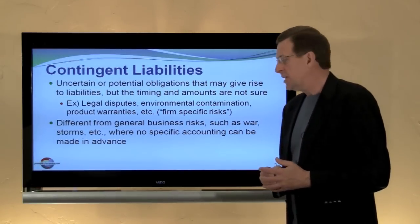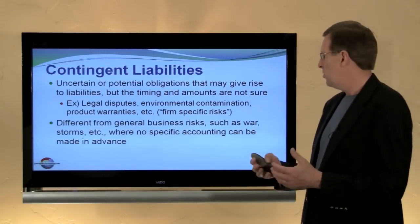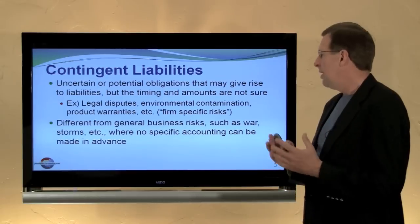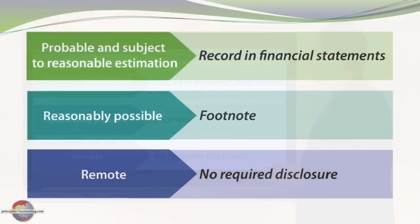Contingent liabilities are different from general business risks such as the risk of war or storms, where no specific accounting is made in advance. We have some criteria-driven outcomes here. If the contingency becoming an actual liability is probable and subject to a reasonable estimation, then we record the liability in the financial statements.